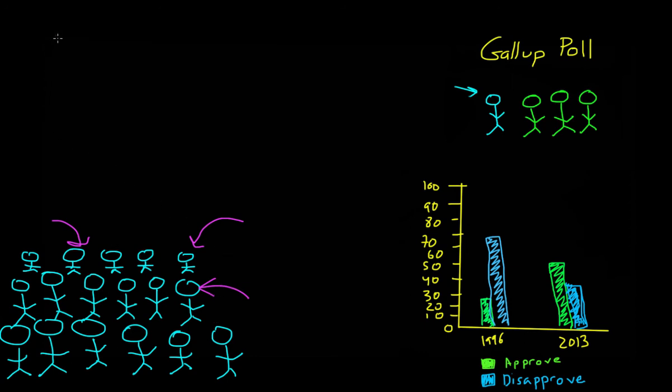In order to make sure that the conclusions that we draw from our sample can be generalized to the entire population, we have to follow a few rules.